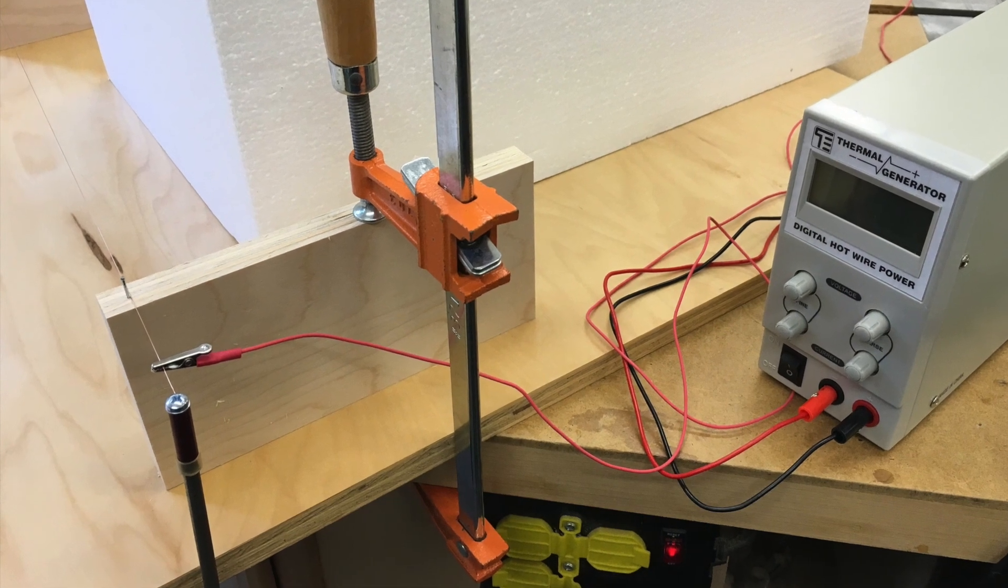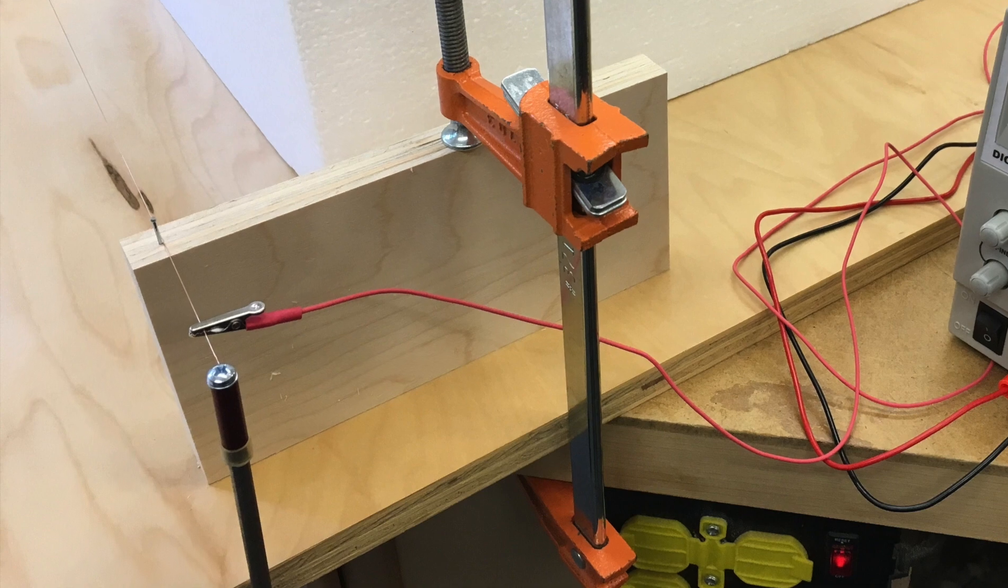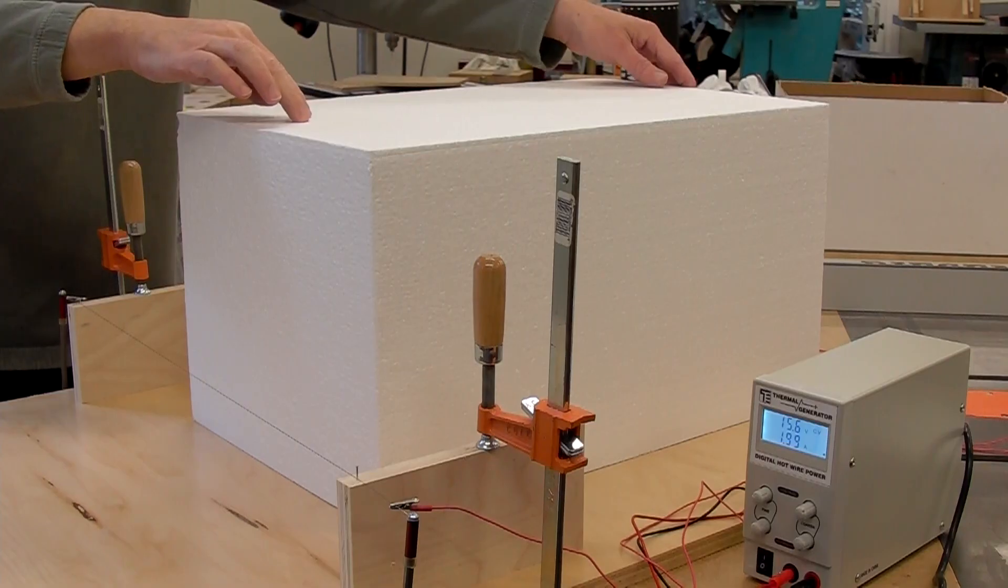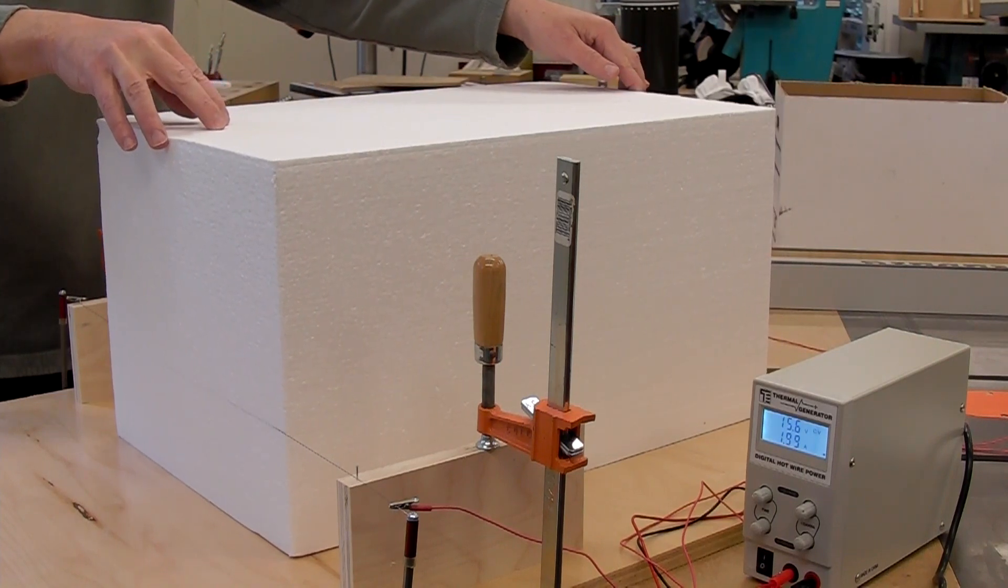And finally, here's the hot wire, which does the actual cutting. When we're ready to start, we connect a thermal generator to both ends of the wire and set the voltage appropriately for the length in between. To cut, just slide the block slowly and smoothly through the wire.